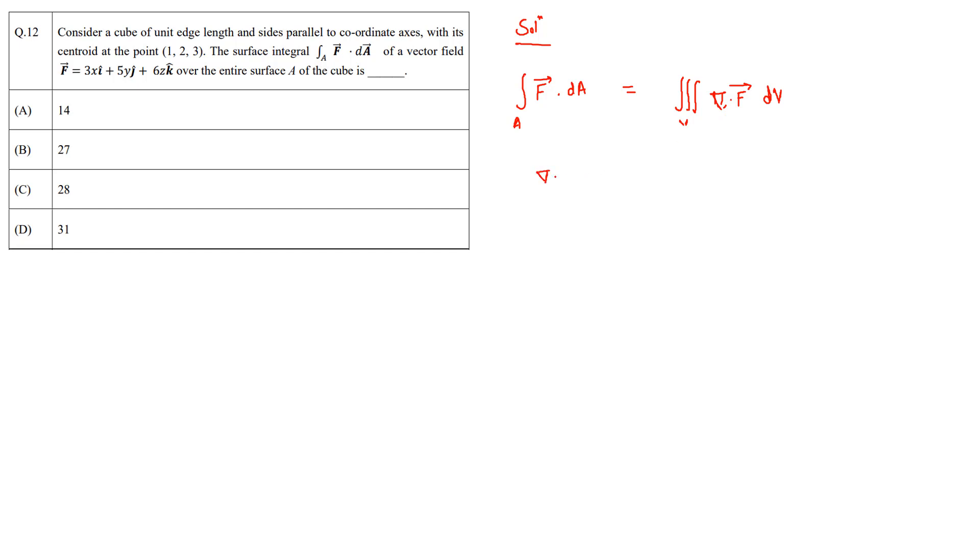Now let's calculate the divergence of the vector field. This is simply equal to ∂/∂x of the x component plus ∂/∂y of the y component plus ∂/∂z of the z component of the vector field. The vector field given to us is 3x i-cap + 5y j-cap + 6z k-cap, so this is Fx, this is Fy, and this is Fz.